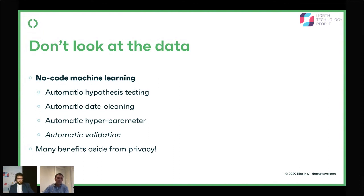This has practical challenges: you have to do automatic data cleansing, automatic hyperparameter tuning, and — most importantly — automatic validation, because everyone wants to know if they can trust the model. And then there's automatic hypothesis testing, because sometimes one machine learning technique might not work well on all data, so you have to try several and have the system automatically choose the correct one. But there are many benefits beyond solving the privacy problem: every large customer needs to customize things, and this provides an excellent way to scale without needing developers or ML PhDs in the loop.